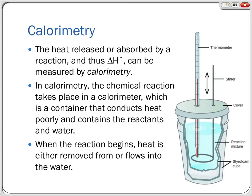We've looked at enthalpy changes and standard reaction enthalpies, but one of the things we need to know how to do is how do we actually measure this — how do we figure out how much heat a reaction releases or absorbs? The technique used for this is called calorimetry, which is basically a method for measuring the heat flow in or out of a reaction.